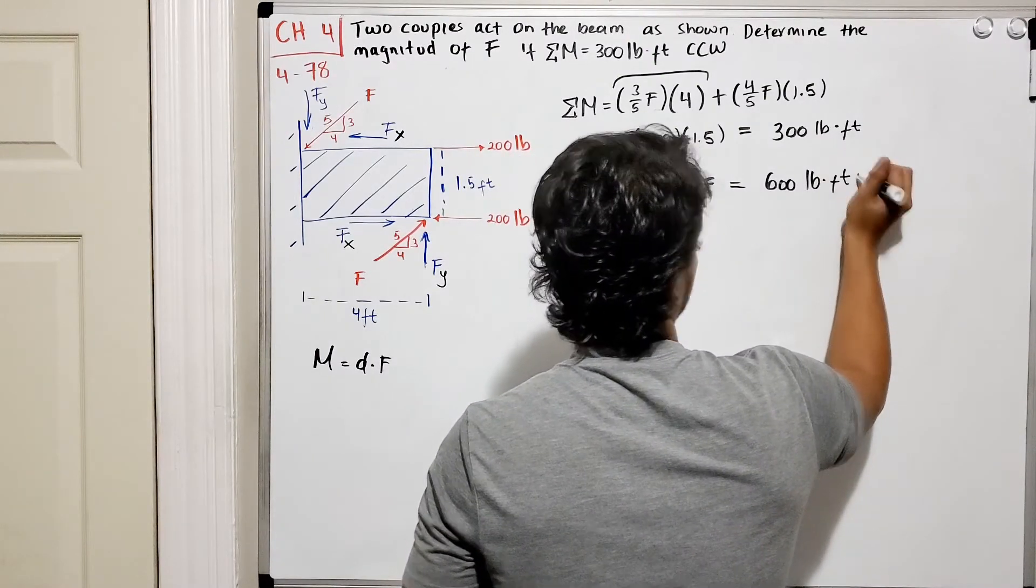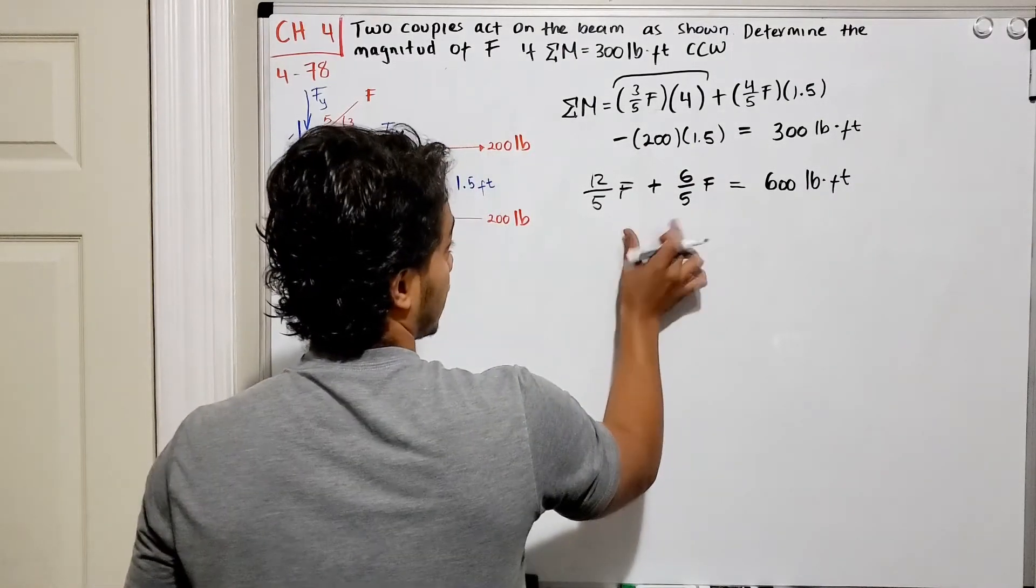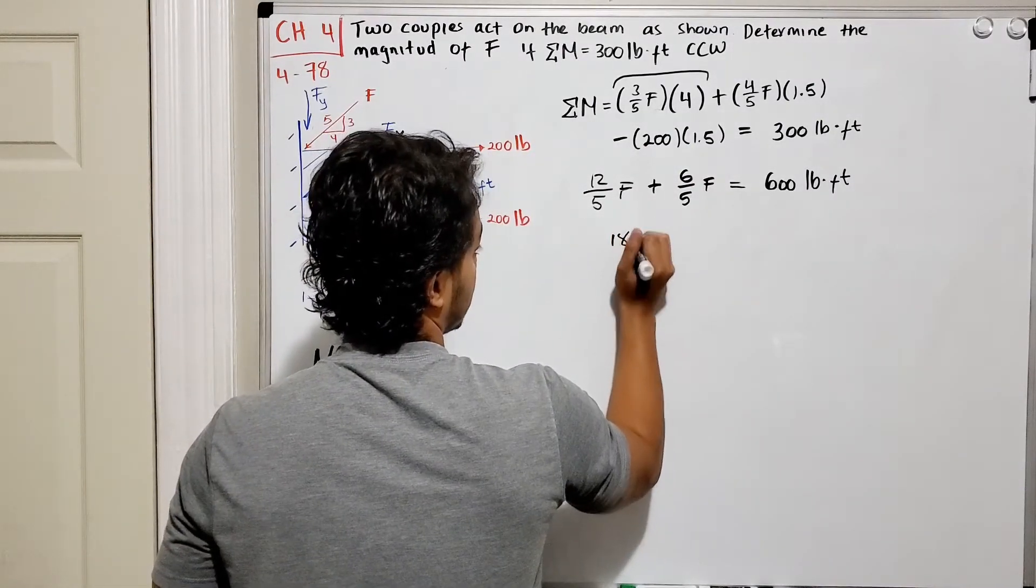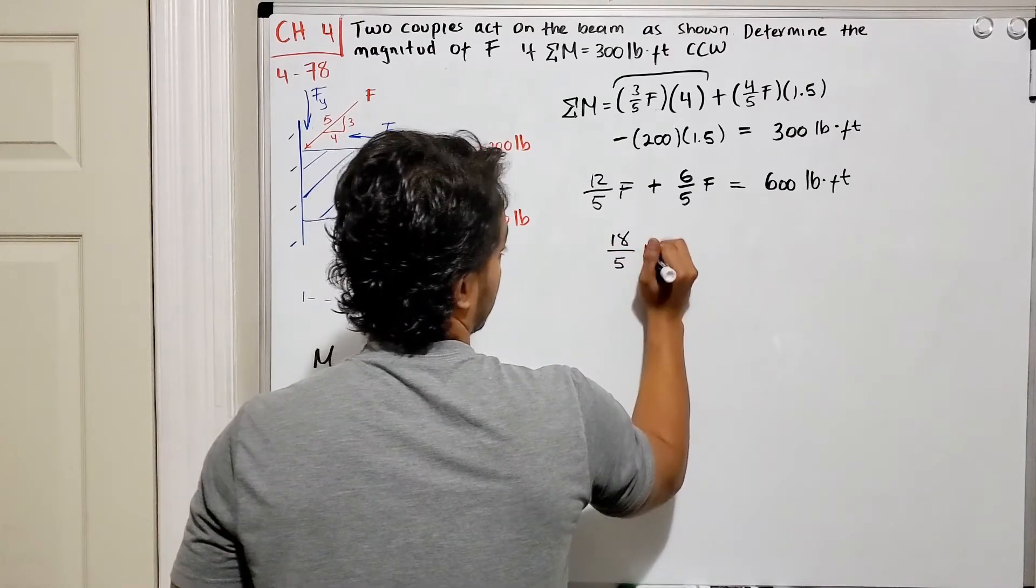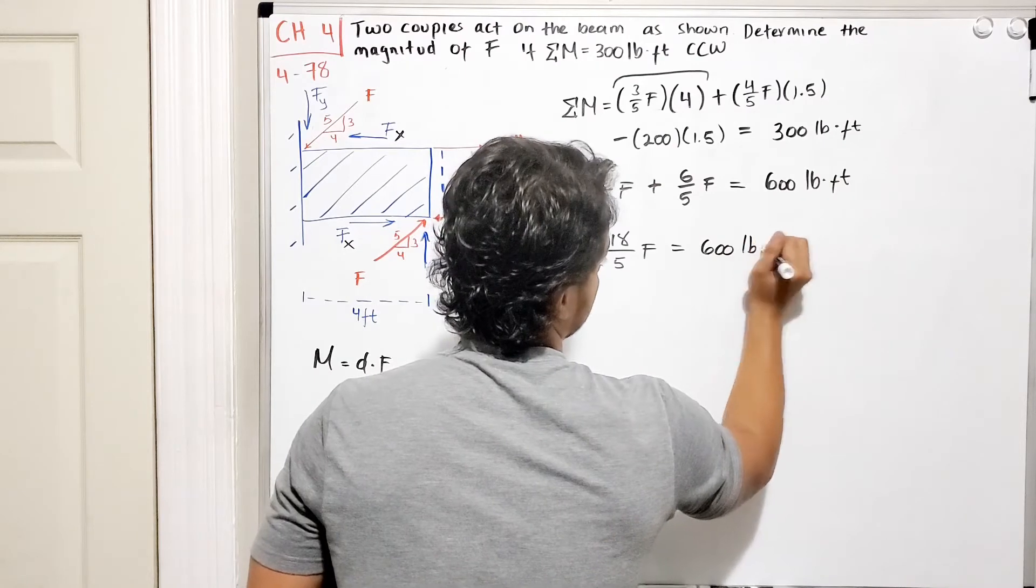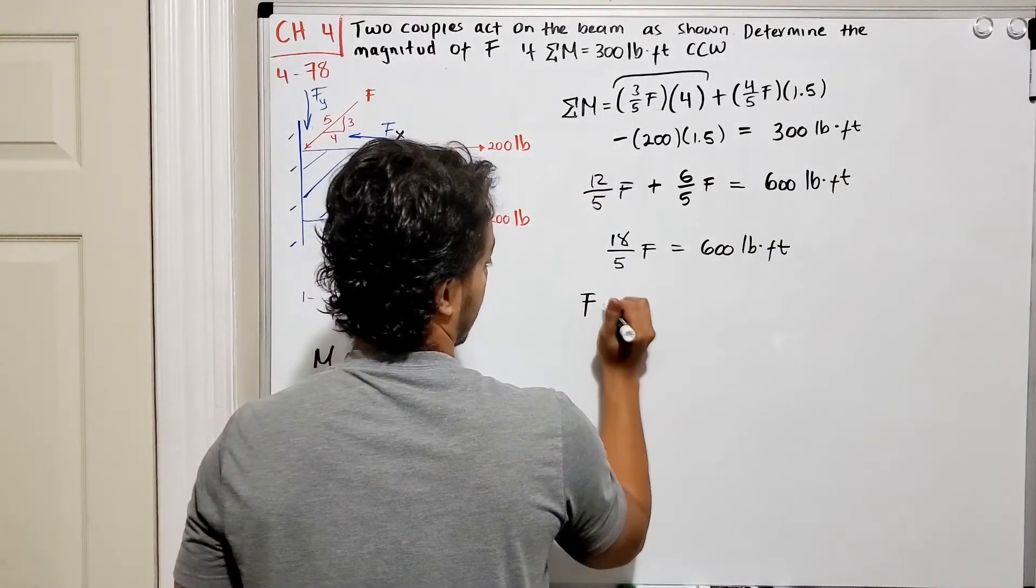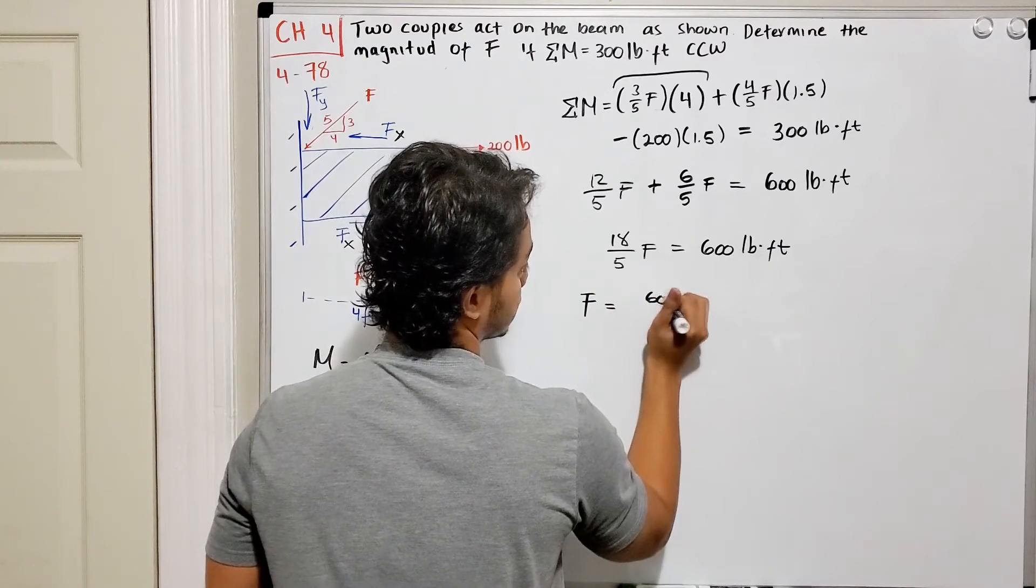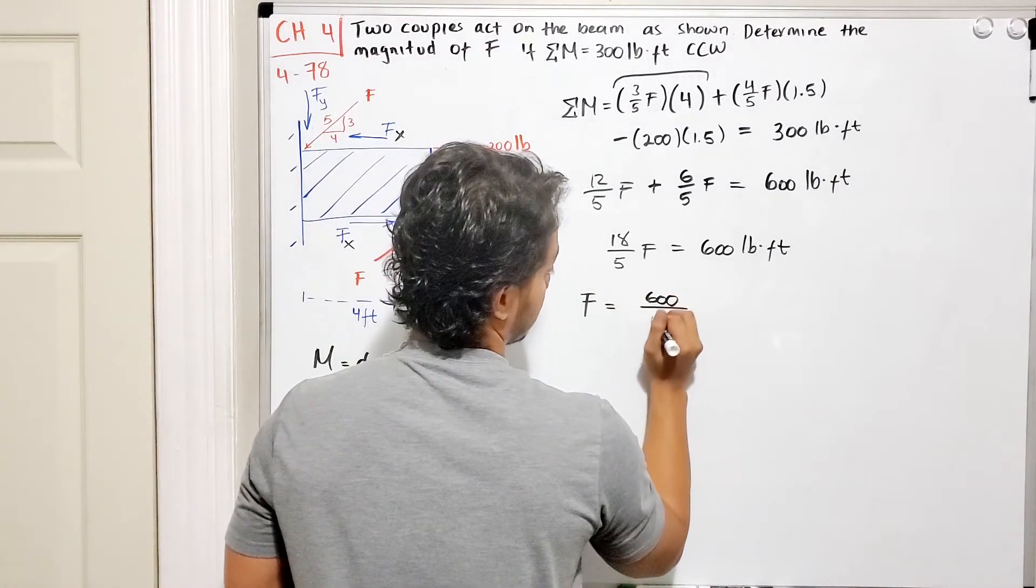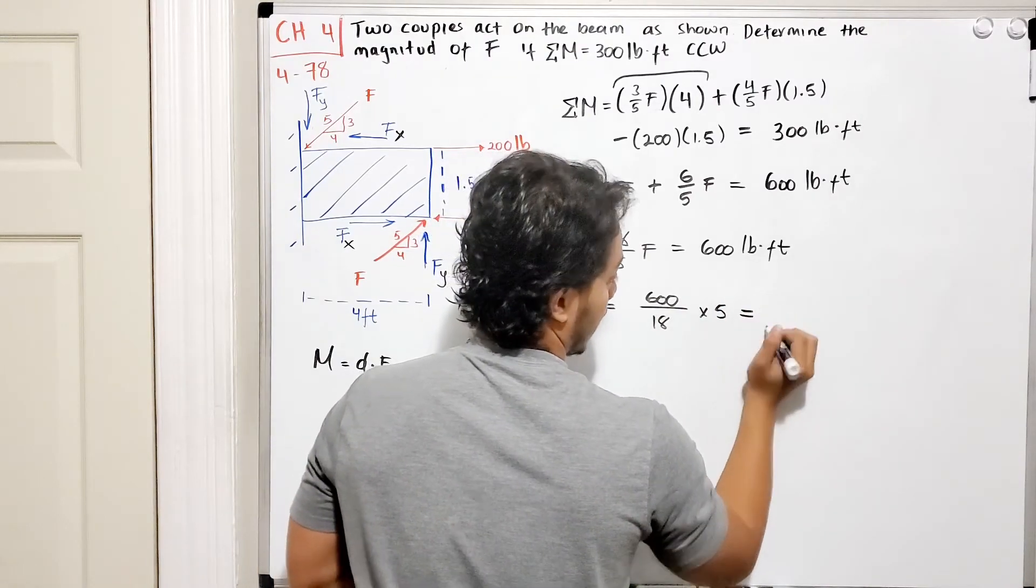Now if we add these two guys together we will end up with 18 out of 5 of my force F, which is equal to 600 pounds-feet. And if we solve for F, we will get F is going to be equal to 600 divided by 18 and multiplied by 5.